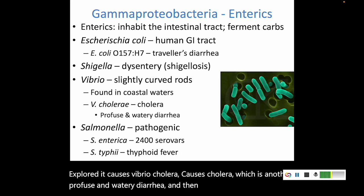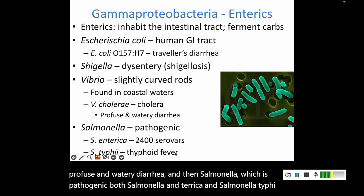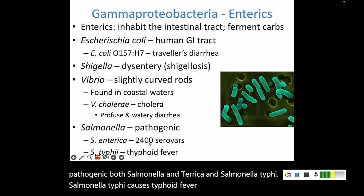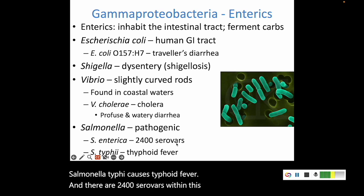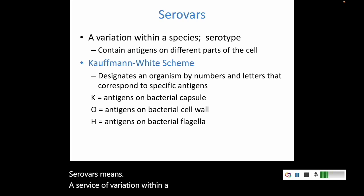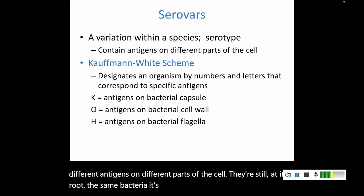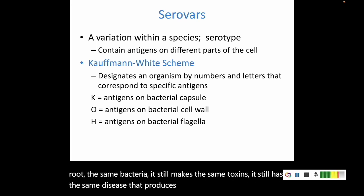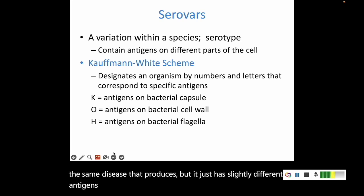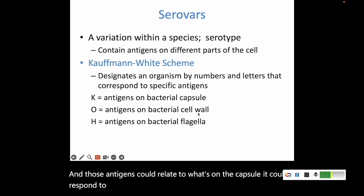Salmonella is pathogenic — both Salmonella enterica and Salmonella typhi. Salmonella typhi causes typhoid fever, and there are 2,400 serovars within this genus. A serovar is a variation within a species: they have slightly different antigens but are still, at their root, the same bacteria, making the same toxins and causing the same disease. Those antigen differences can relate to the capsule, the bacterial cell wall, or bacterial flagella.